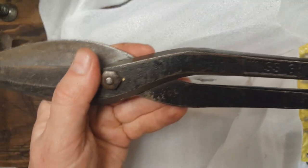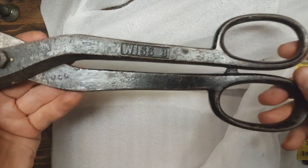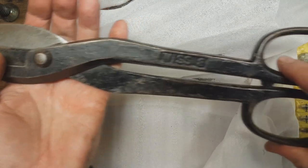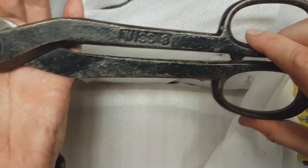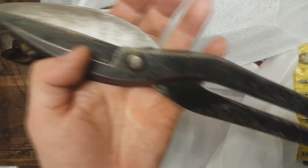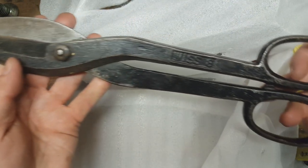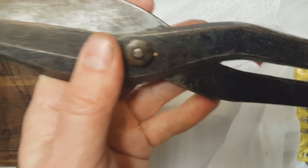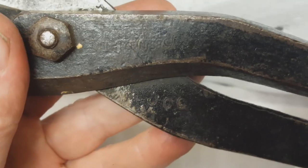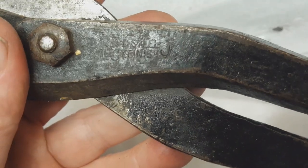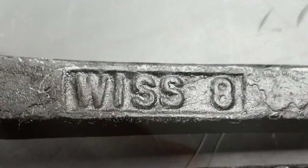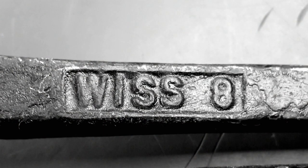And we've got some awesome WIS sheet metal cutters here. Number eights. And it looks like they could still do some cutting. Can't quite read that. All right.